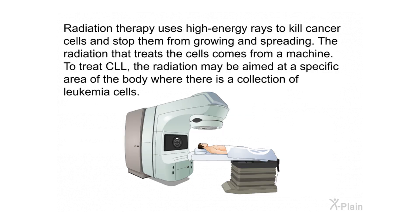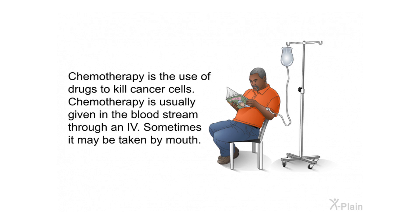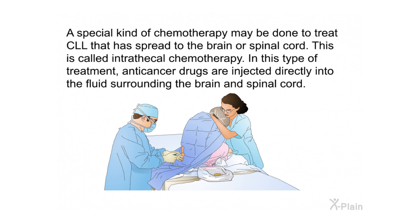Radiation therapy uses high-energy rays to kill cancer cells and stop them from growing and spreading. To treat CLL, radiation may be aimed at a specific area of the body where there is a collection of leukemia cells. Chemotherapy is the use of drugs to kill cancer cells, usually given through an IV, though sometimes taken by mouth. A special kind of chemotherapy called intrathecal therapy may treat CLL that has spread to the brain or spinal cord, where anti-cancer drugs are injected directly into the fluid surrounding the brain and spinal cord.